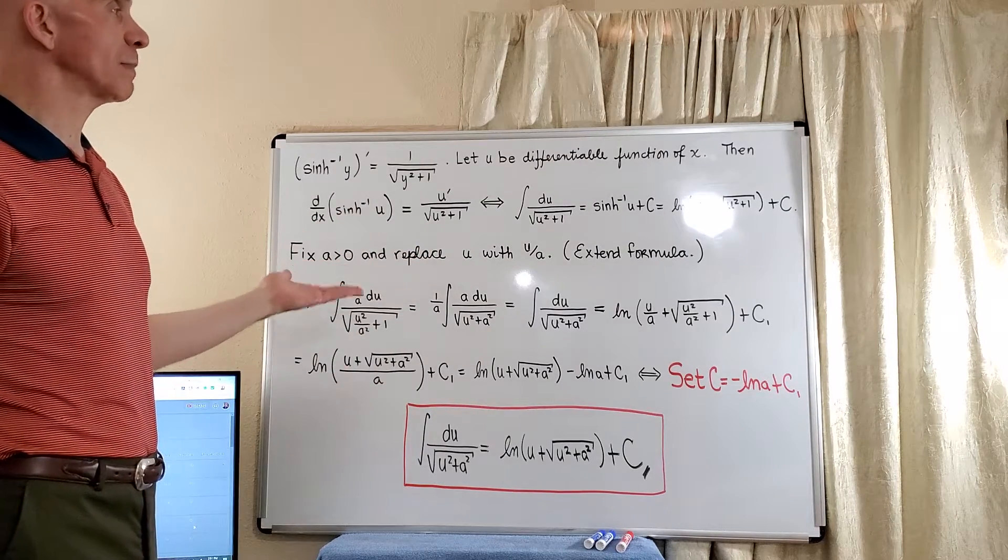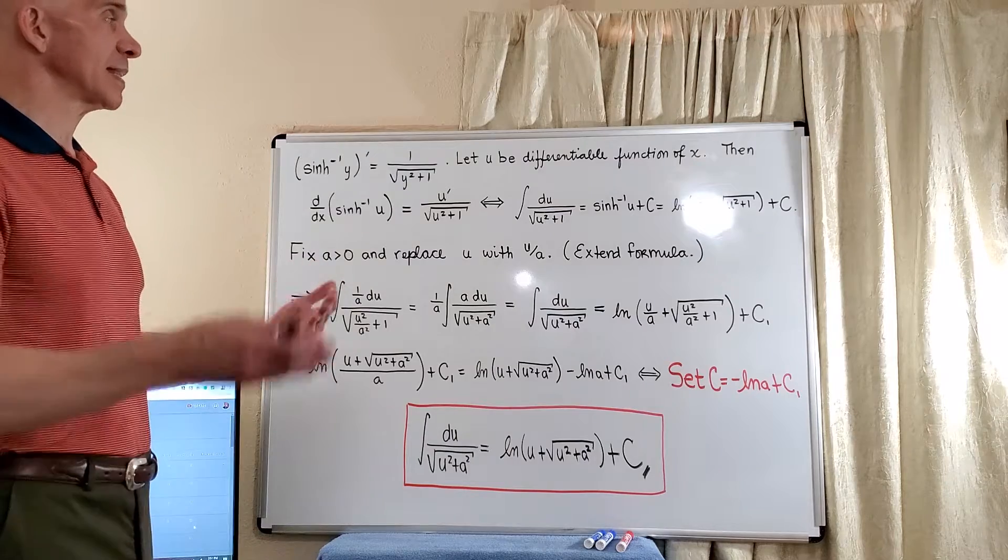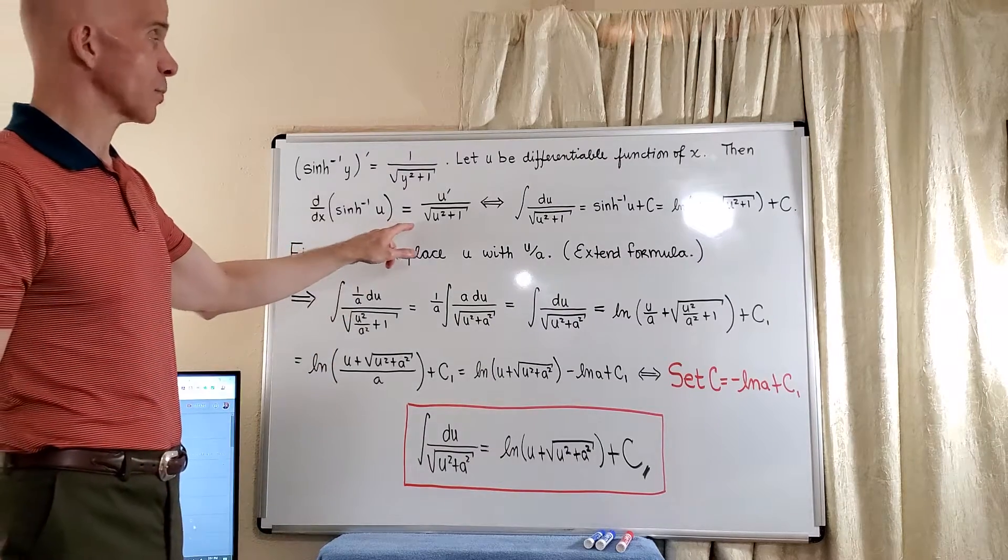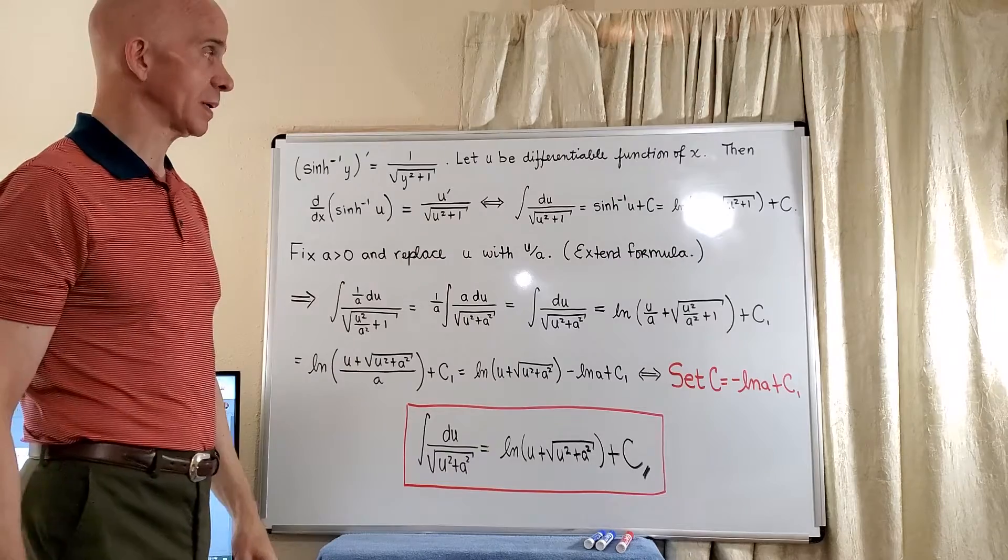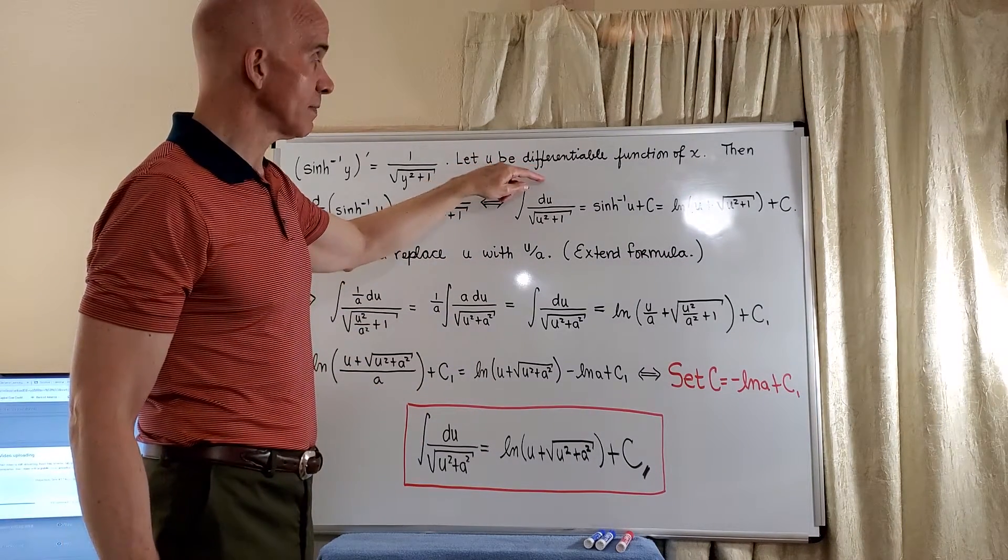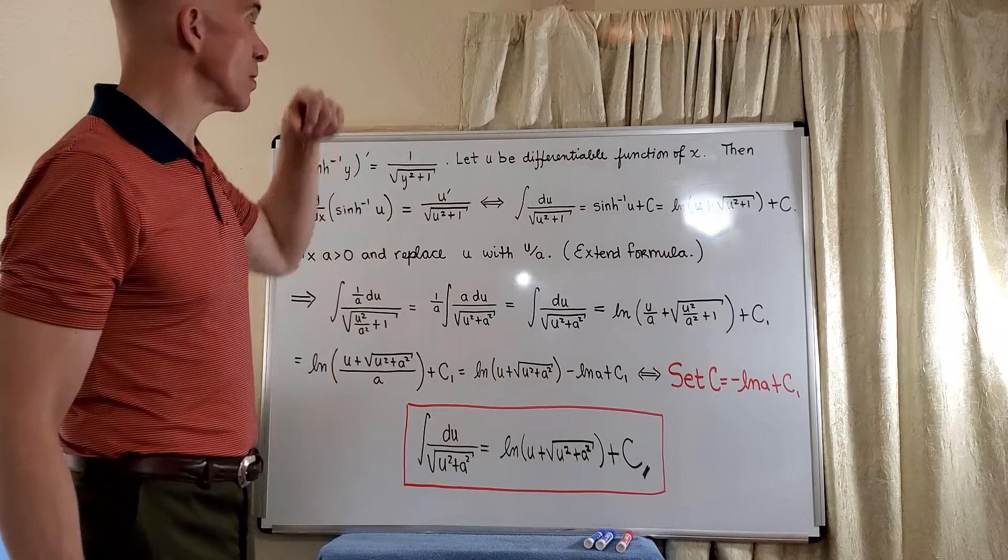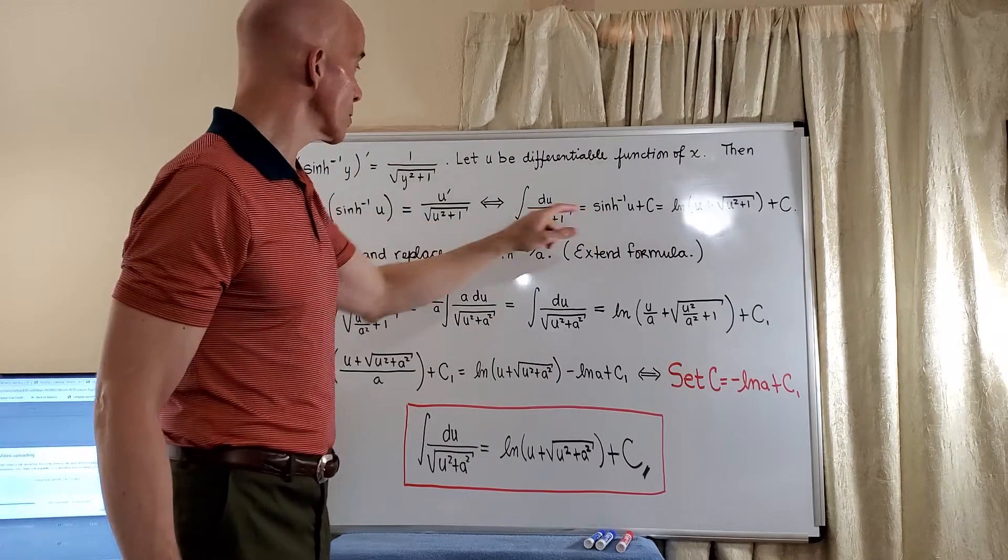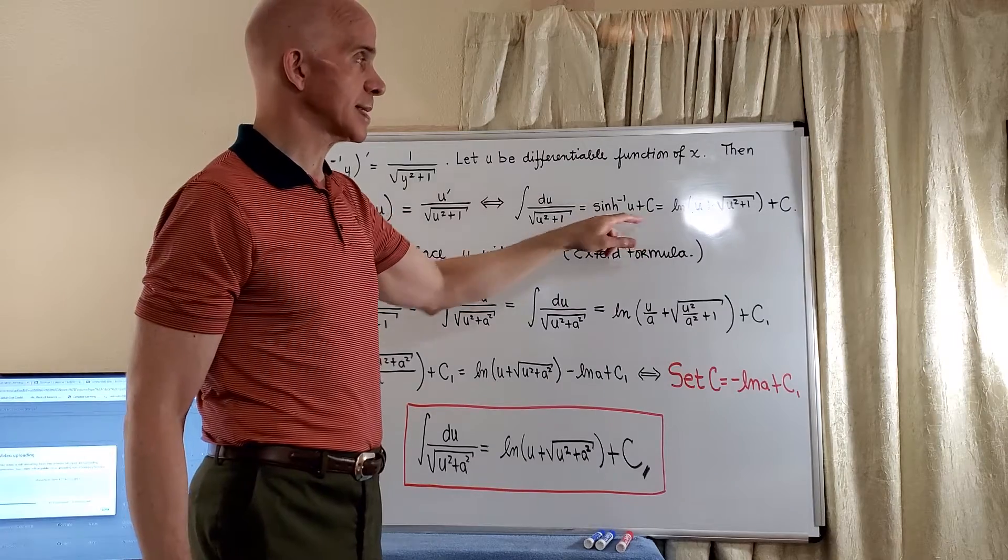Now of course, just like we've done many times before, we can take the inverse process and convert this derivative formula into an antiderivative formula. So this will give us the antiderivative or the integral of du over the square root of u squared plus 1 is equal to the inverse hyperbolic sine of u plus c.